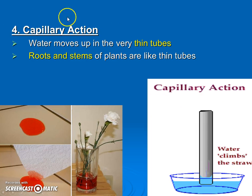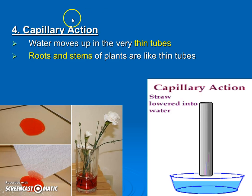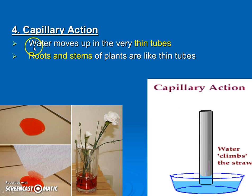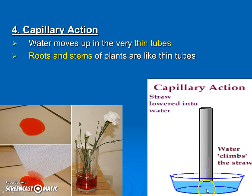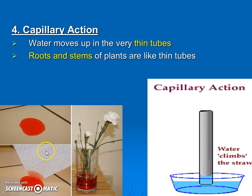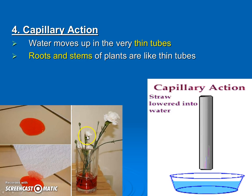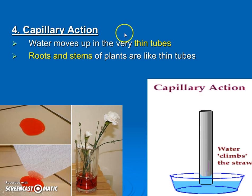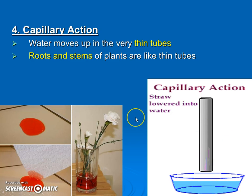The fourth vocab term is capillary action. A capillary is a thin tube — you actually have capillaries, which are very thin blood vessels. In thin tubes, such as those inside plants, water is able to move upward. It uses adhesion to grab the sides of the tube, and cohesion to pull on other water molecules, moving up the tube. This is what allows water to climb up a paper towel or travel up a plant stem to reach a flower.